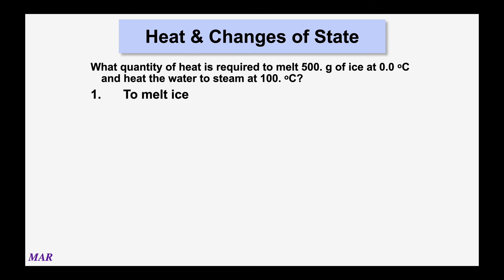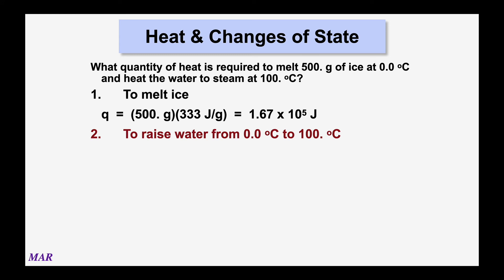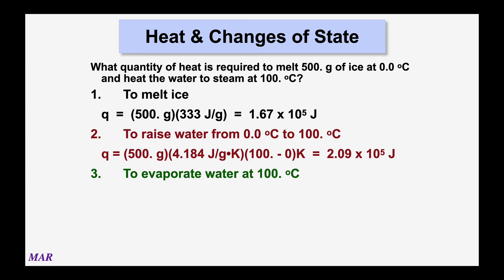For step one, melting the ice: 500 grams times 333 joules per gram gives 1.67 × 10⁵ joules to turn the 500 grams of ice into liquid water. For step two, raising the water to 100°C using q equals mc delta T: 4.184 joules per gram kelvin times 500 grams times a delta T of 100 degrees gives 2.09 × 10⁵ joules. Interestingly, the energy to heat the water is about equal to the energy required to melt the ice.